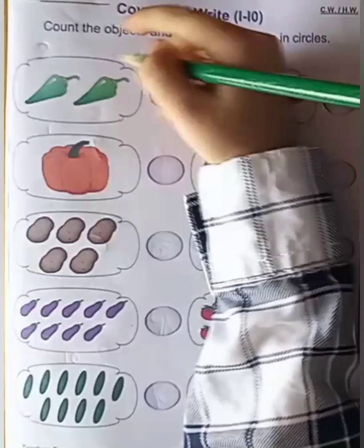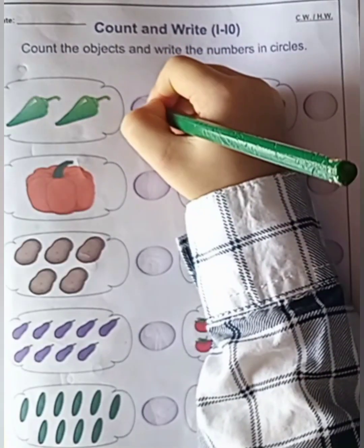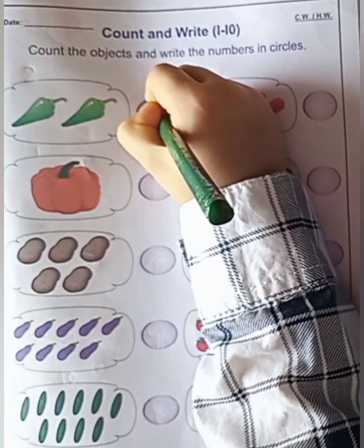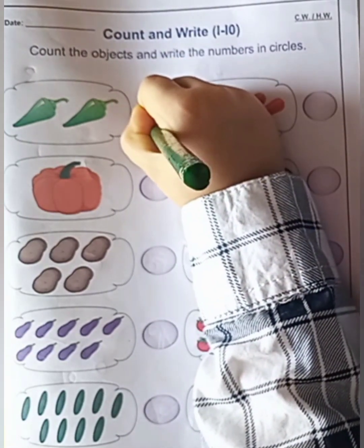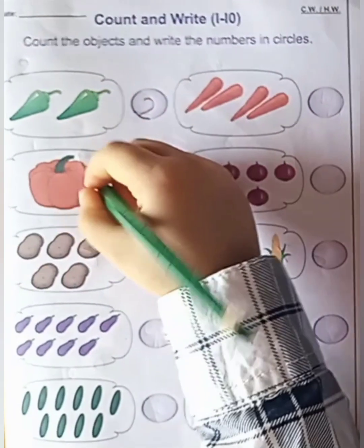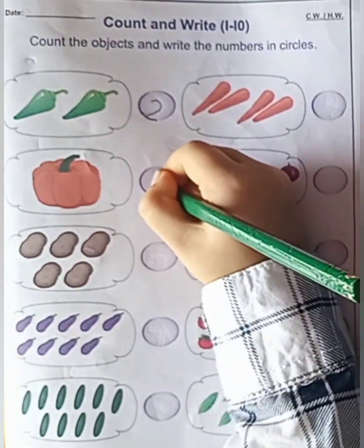Can you count how many chilies are there? One, two. Two chilies. Count the next object. One pumpkin.